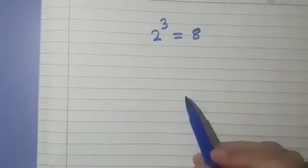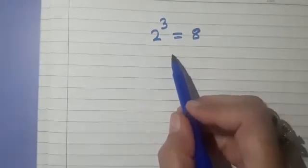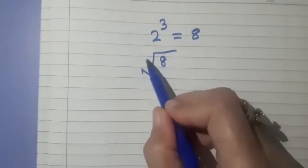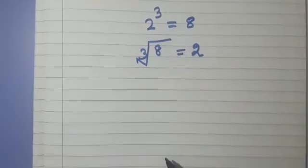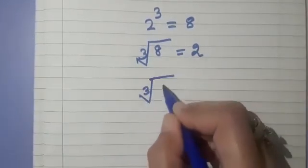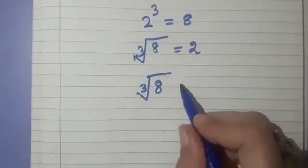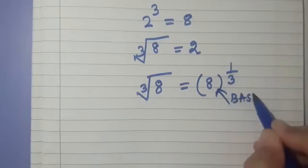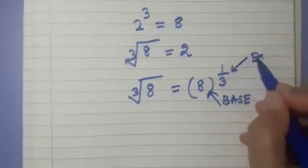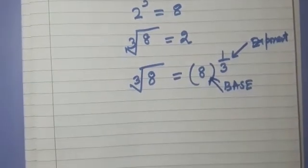What is the cube of 2? 2 cubed is 8. We write this as: cube root of 8 is 2. How do we express cube root of 8 in exponential form? We write cube root of 8 as 8 raised to the power 1 by 3, where 8 is the base and 1 by 3 is the exponent. Here also 1 by 3 is a rational number, so this is a rational exponent.